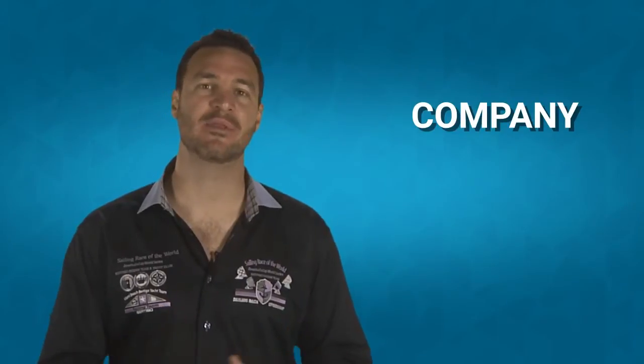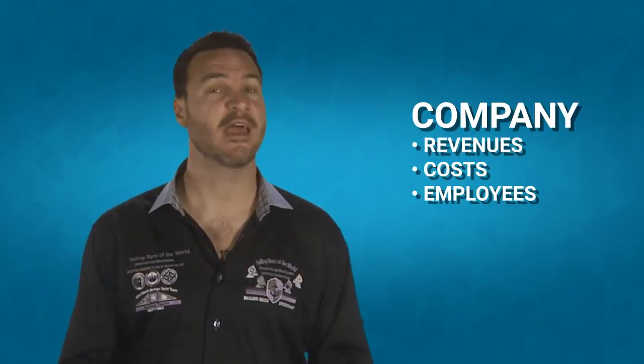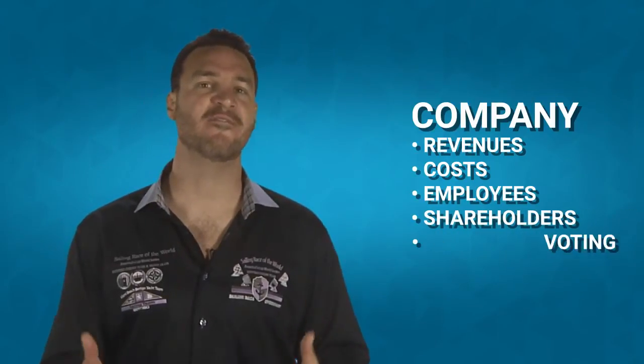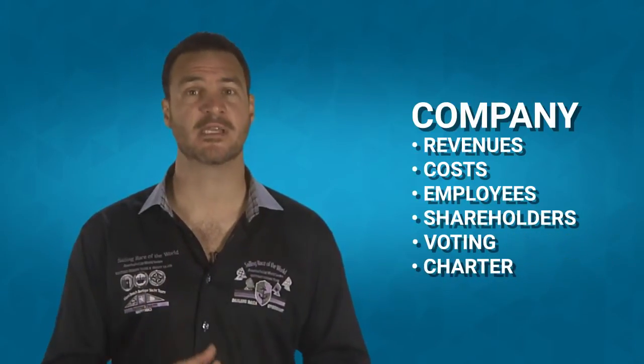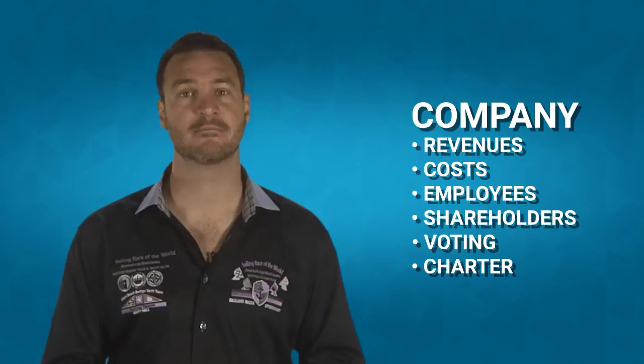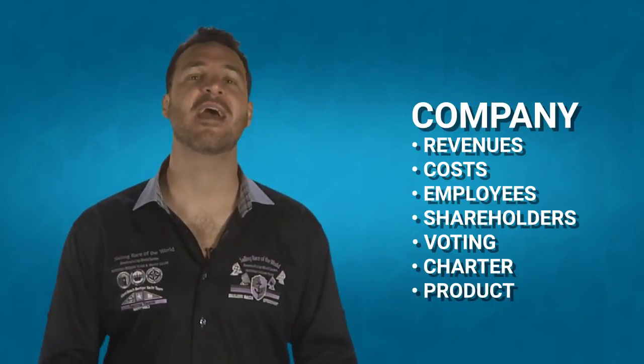First of all, a DAC is a company. That means it has many similar components that ordinary companies have as well. DACs have revenues, they have costs, they have either a profit or a loss, they have employees, they have shareholders, shareholders have voting rights, they have a charter — a set of rules by which the company operates — they have a product, and hopefully most of all they have customers.